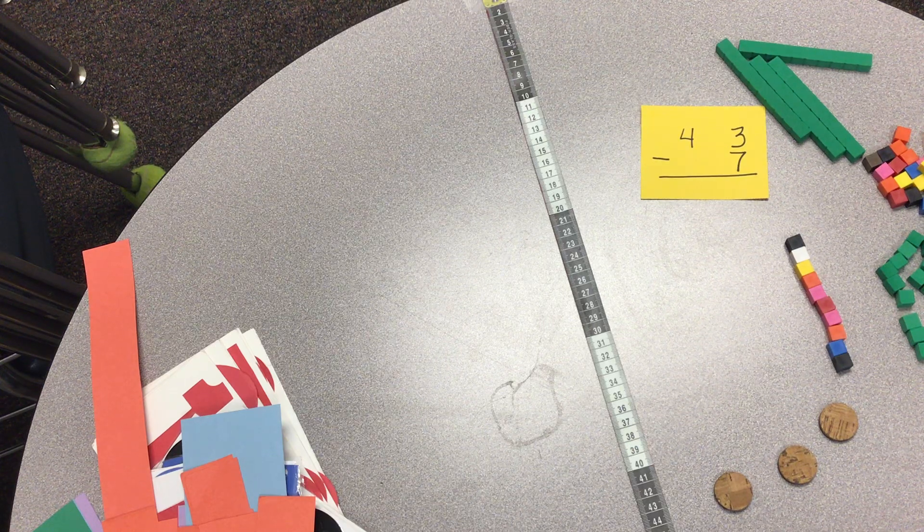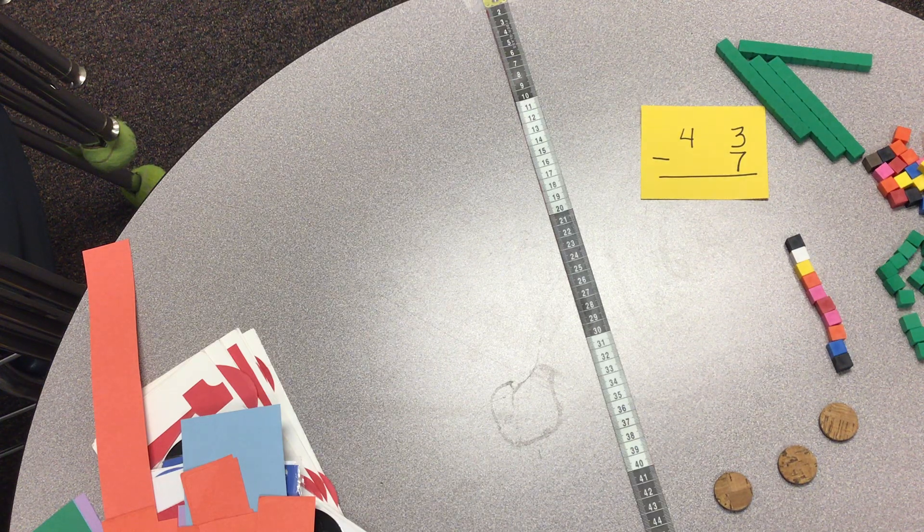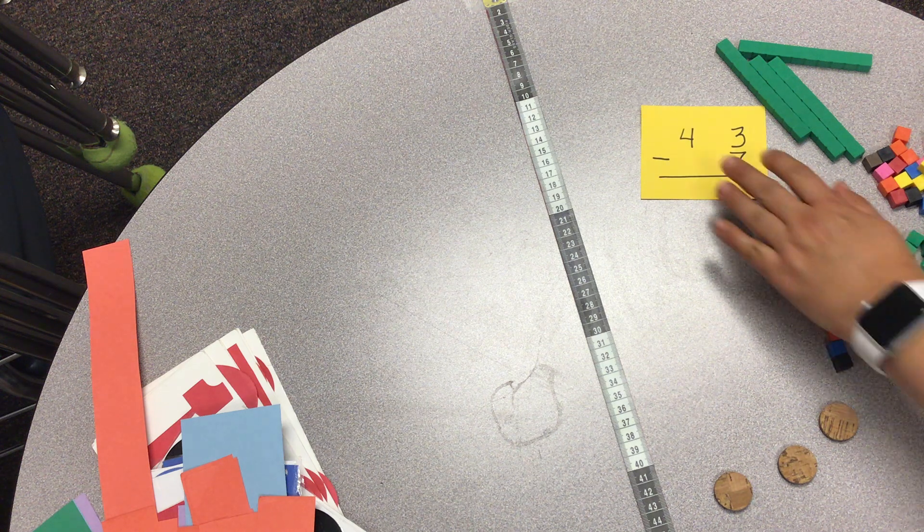Let's subtract 43 minus 7. We have to start with the first number, which is 43.